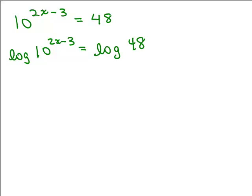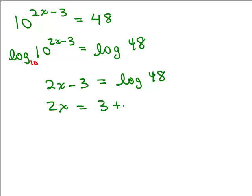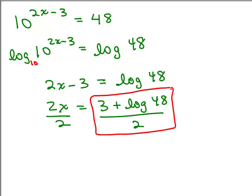So we've got the log of 10 to the 2x minus 3 equals the log of 48. And now, just like in the previous example, since the base is 10, this simply equals 2x minus 3 on the left-hand side, equals the log of 48. And now, we can finish solving for x by adding 3 and dividing by 2. So let's do that. First, we'll add 3. So I'm going to write this as 3 plus log of 48. And then we'll divide both sides by 2. And this is our exact answer for x.